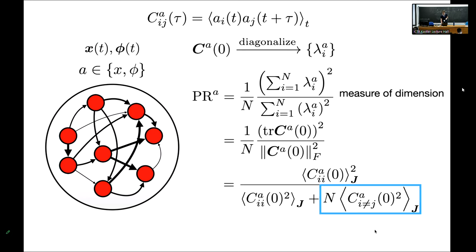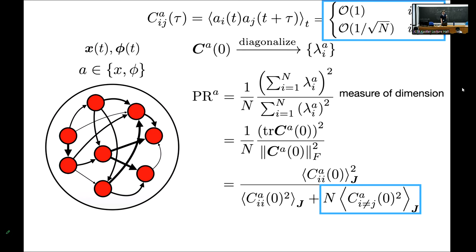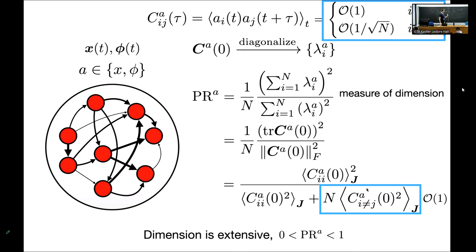The non-trivial contribution in the denominator comes from the off-diagonals — the mean square cross-covariance between two distinct neurons. If a given cross-covariance were order 1/N or smaller, this would be zero, and I'd get exactly one for the normalized participation ratio, meaning all dimensions filled up equally. However, the off-diagonals are order 1/√N, so this contribution ends up being order one. The un-normalized dimension is extensive — always some fraction of the number of neurons — but it's a non-trivial fraction, so the normalized PR could be anything between zero and one.